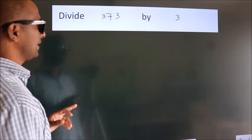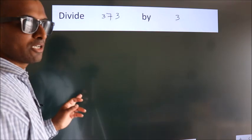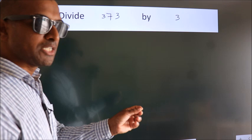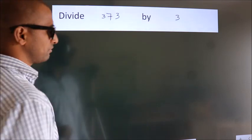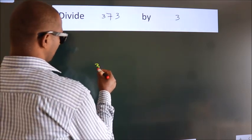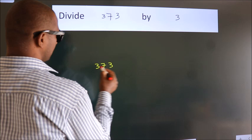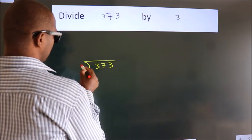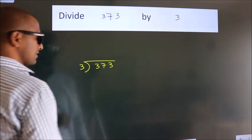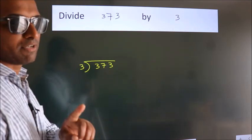Divide 373 by 3. To do this division, we should frame it in this way: 373 here, 3 here. This is your step 1.